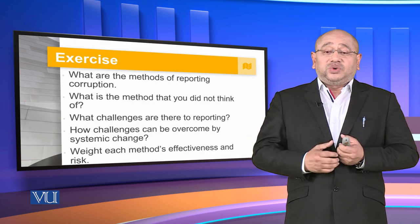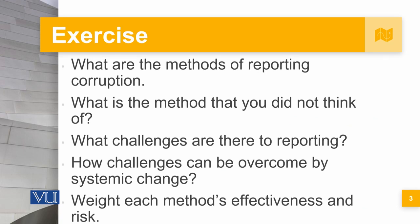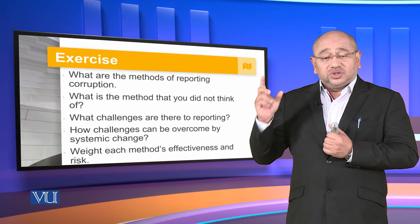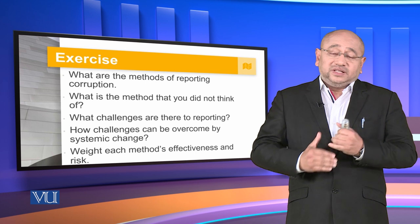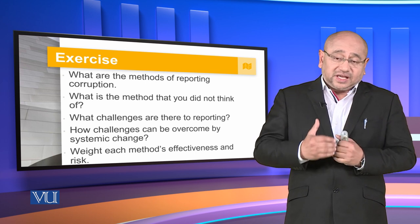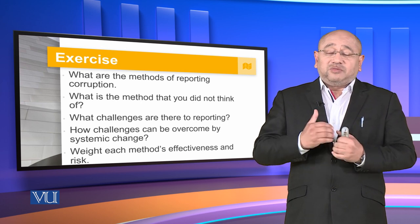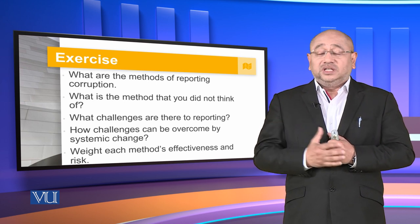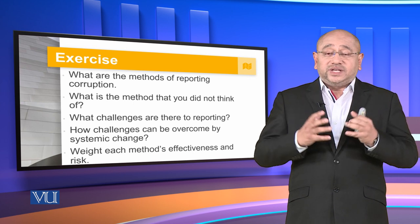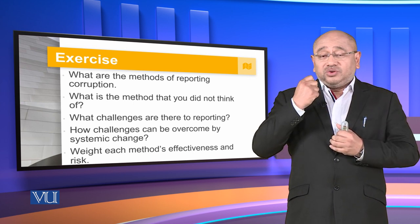The next thing you are going to do is identify what are the methods of reporting corruption. Based on all the different sessions we have attended, think of the different methods of reporting. Then do a little bit of research and see which method you did not think of. Consider the challenges to reporting — are there certain vested interests, mafias, or people so powerful that reporting would become very difficult or immaterial?